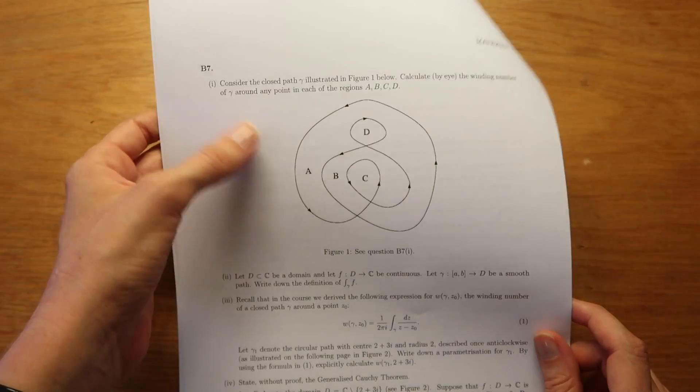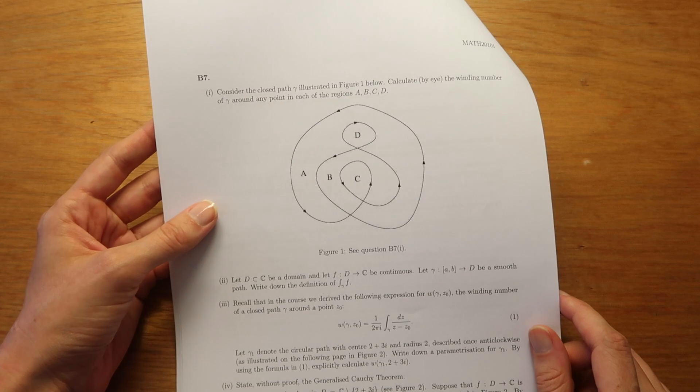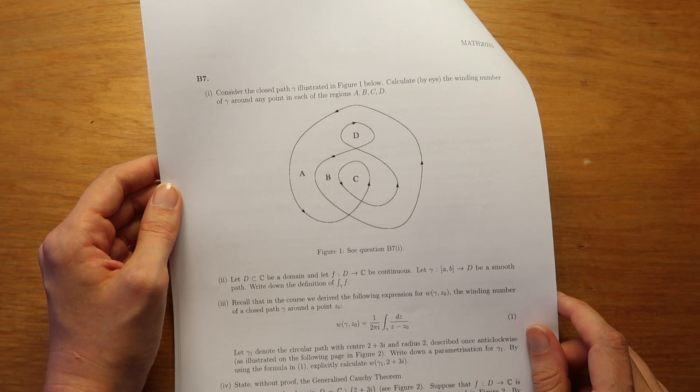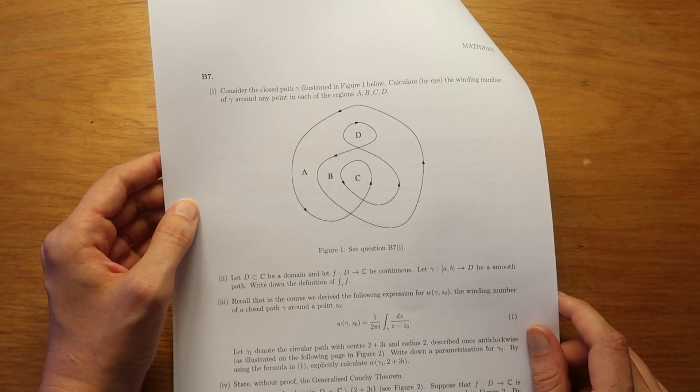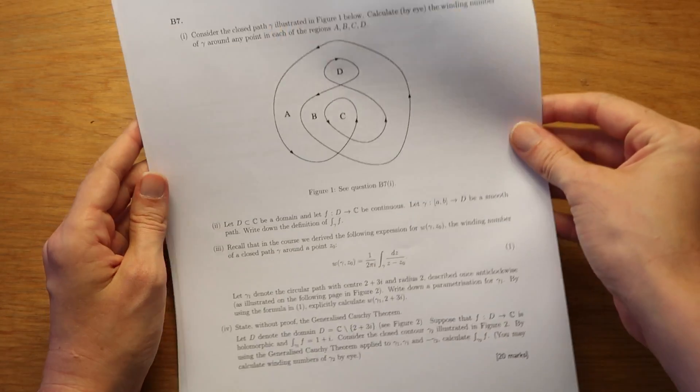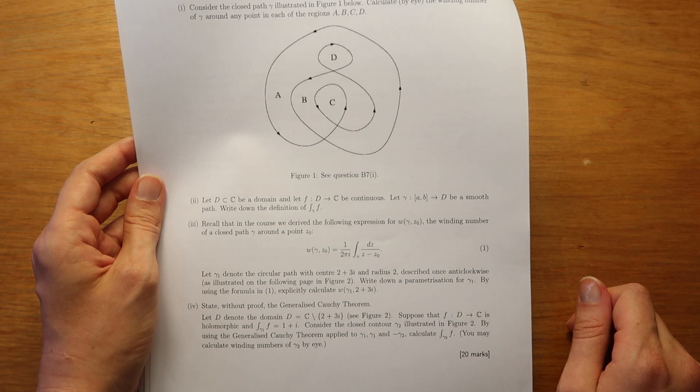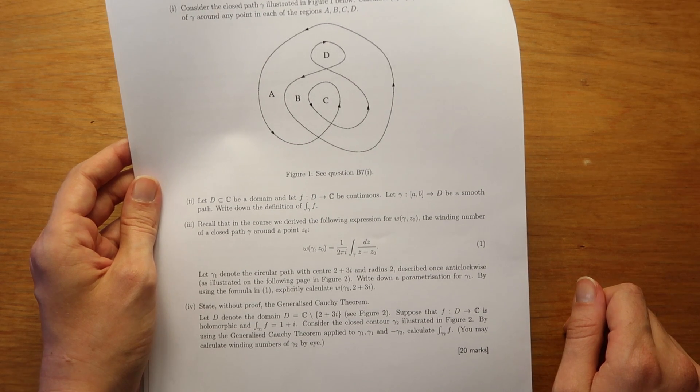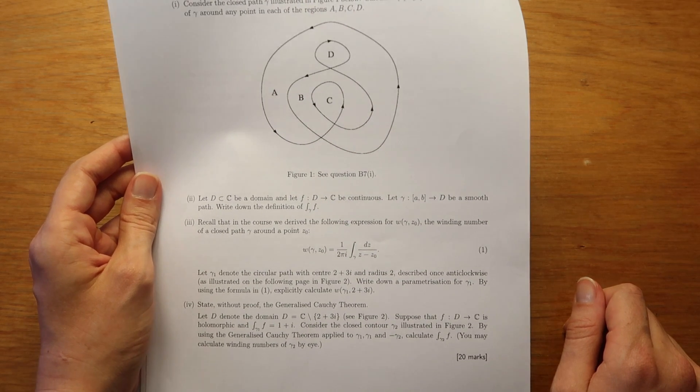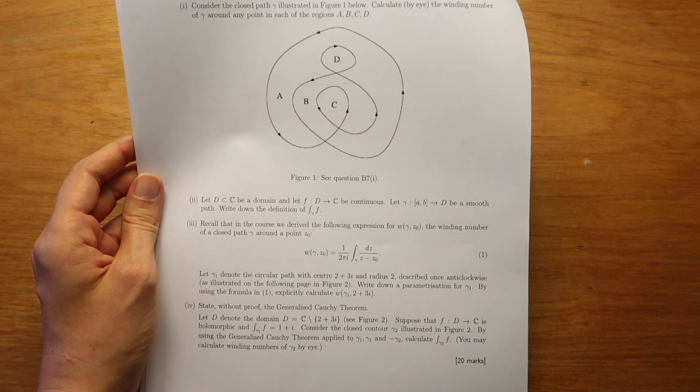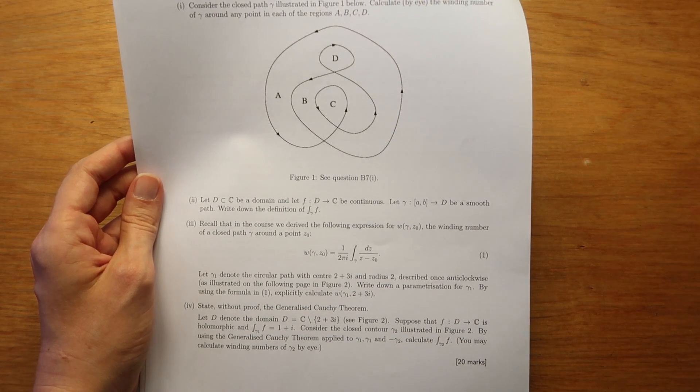So essentially here we have this big crazy figure and what we're doing is taking integrals around certain paths. Now usually or often I guess certain integrals are quite hard to do normally, but there's this thing that you learn about in complex analysis where you can take an integral that's usually quite difficult to do.